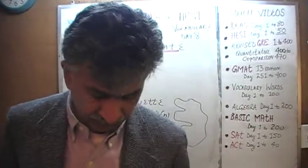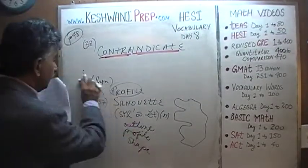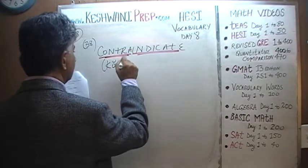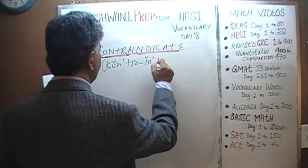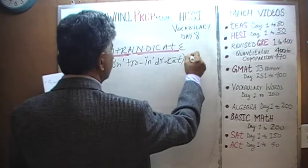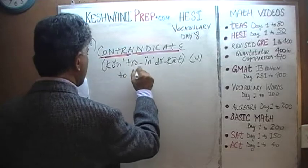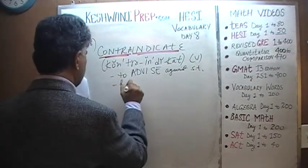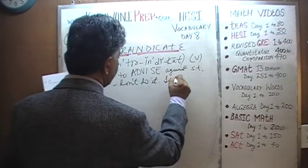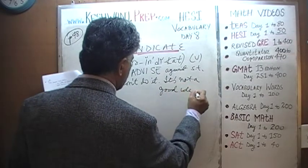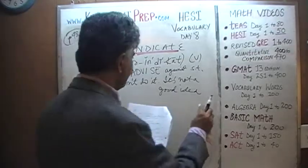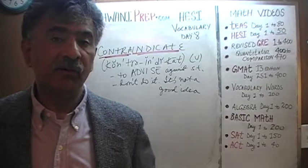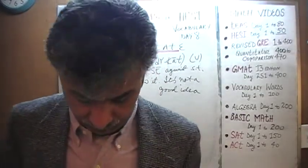So that's the literal meaning. If you were to dissect it, that's what it means literally. How is it used in the medical field? Contraindicate — which means to advise against something. Don't do it, it's not a good idea. If your doctor tells you don't do it, it's not a good idea — if he advises you against doing something — well, that's the contraindication. That's the noun.